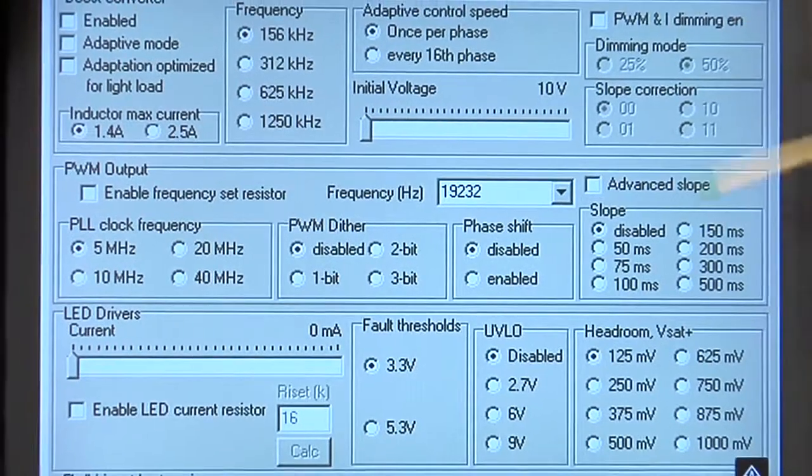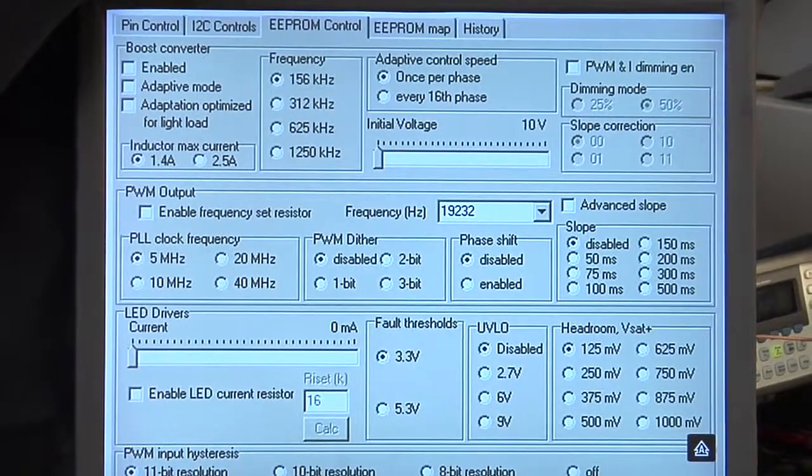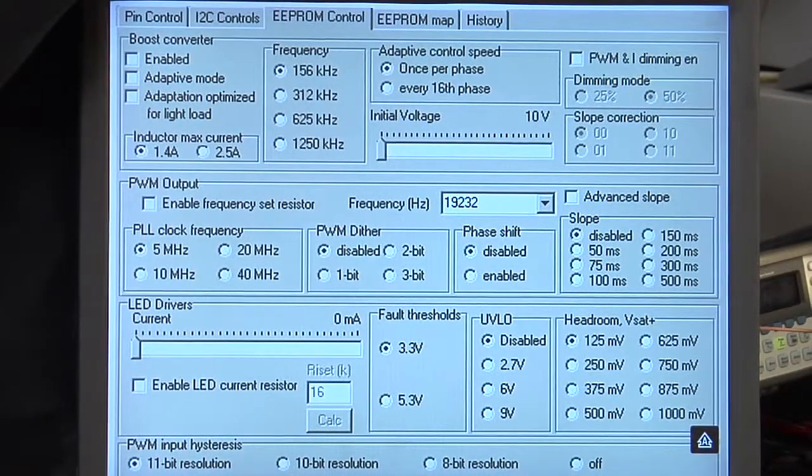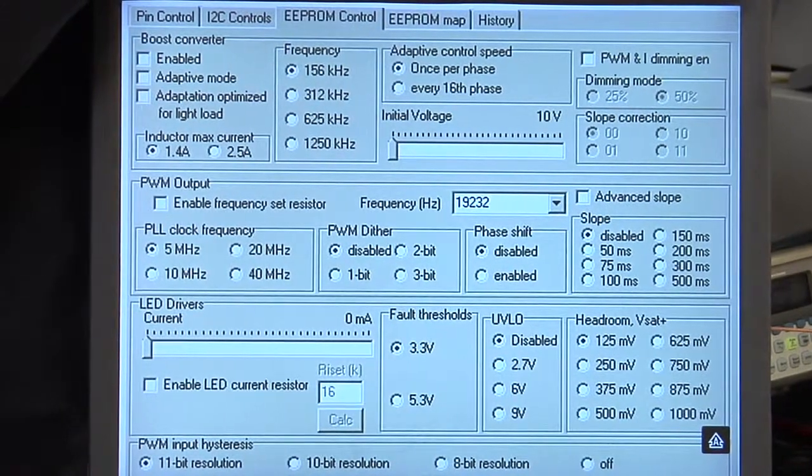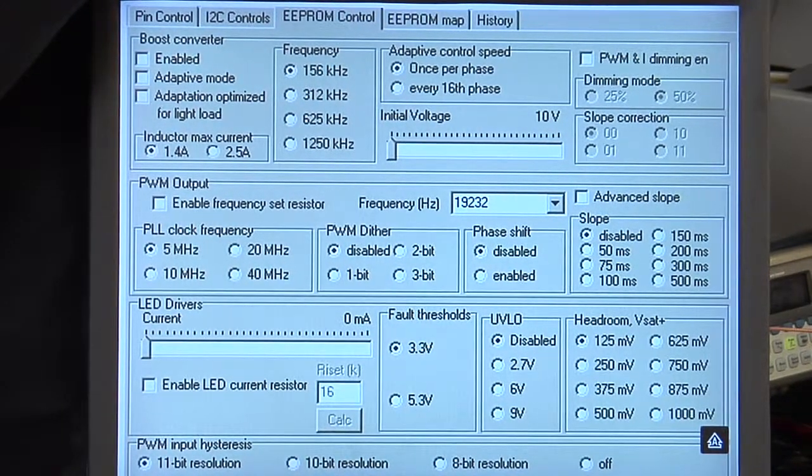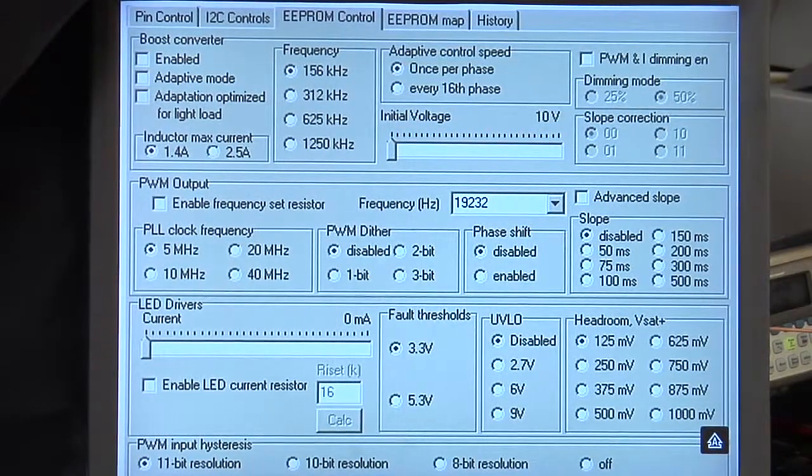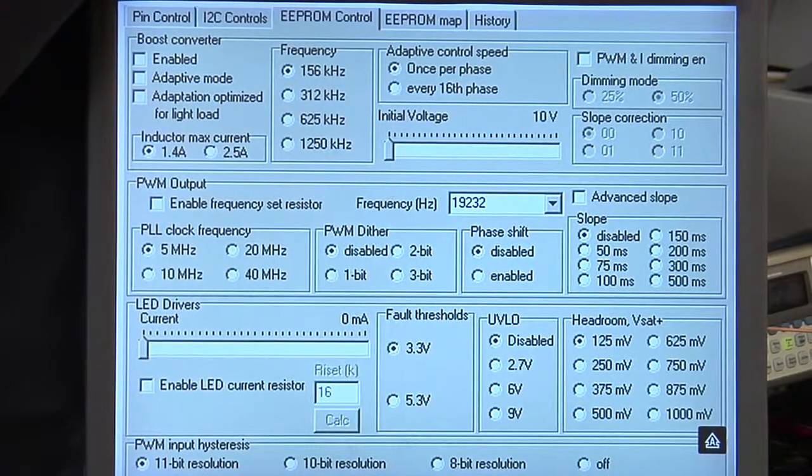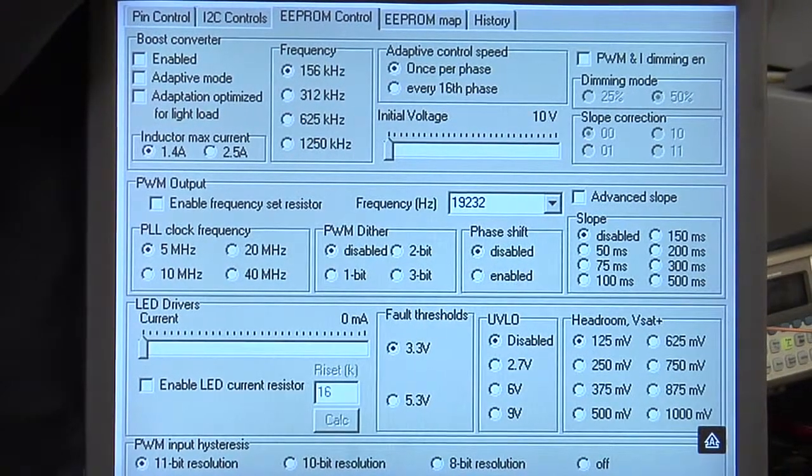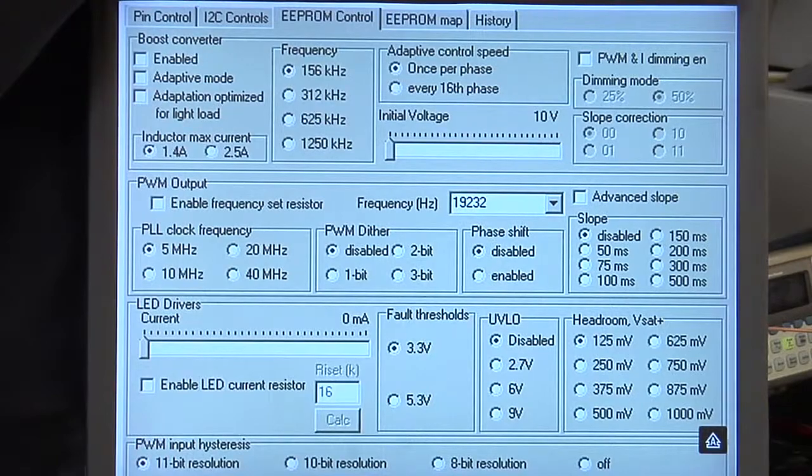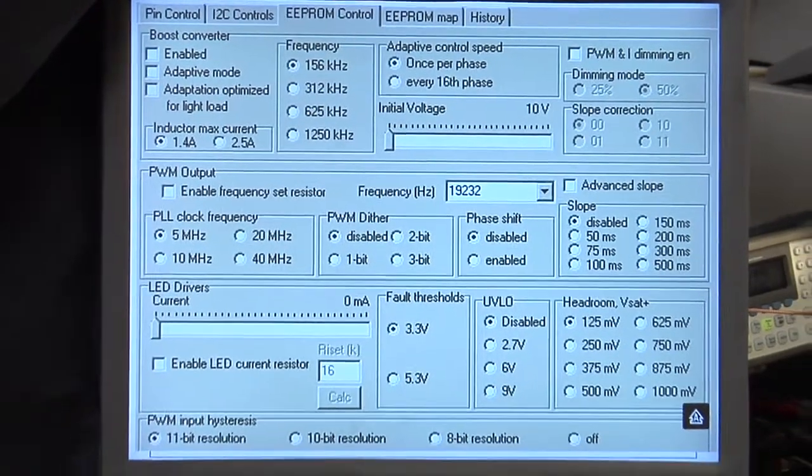Here you can see the various features that LP8552 supports to give flexible options to the customer. As an example, here you can see four different settings for setting the boost frequency and likewise, we have different settings for adjusting the slope of the brightness, headroom, etc. Now, let's go down to the actual demo.